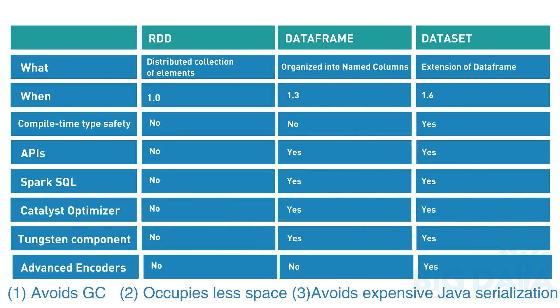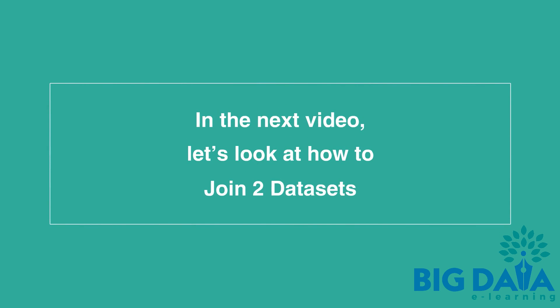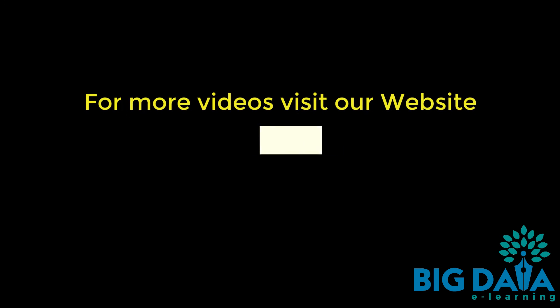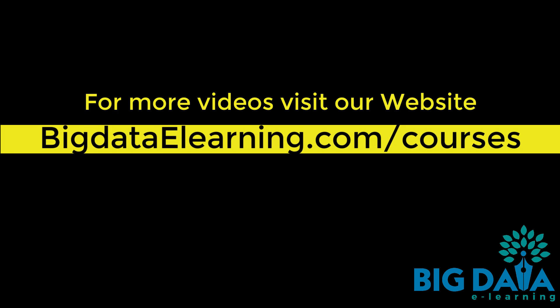Eight: DataSet provides advanced encoders which can provide on-demand access to individual attributes. DataFrame doesn't have this feature. In the next video, let's look at how to join two datasets. For more videos, visit our website at bigdataelearning.com/courses.